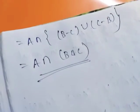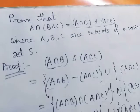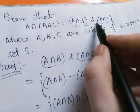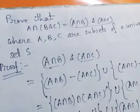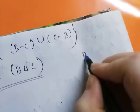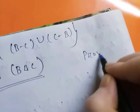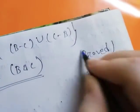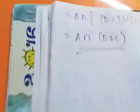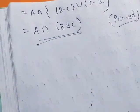So we proved A intersection B delta C equals A intersection B delta A intersection C. Proved. If you like this video, please share, subscribe and comment.